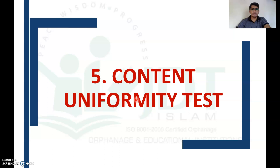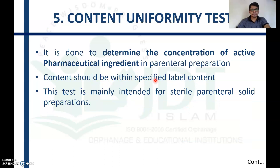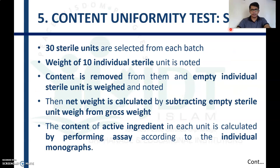The content uniformity test is done to determine the concentration of the active pharmaceutical ingredient in the parenteral preparation. The determined content uniformity should be within the specified label claim as stated in the monograph. This test is mainly intended for sterile parenteral solid preparations. To perform the test, 30 sterile units are taken from each pack; 10 individual units are weighed, the content is removed, the empty unit is weighed, and the net weight is calculated by subtracting the empty unit weight from the gross weight.